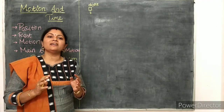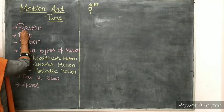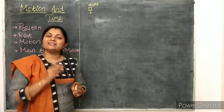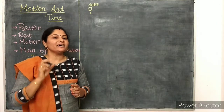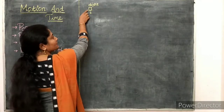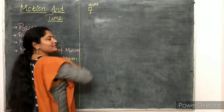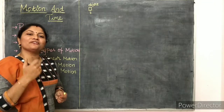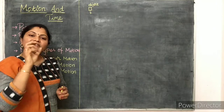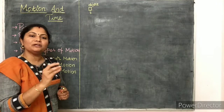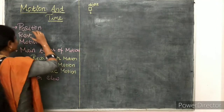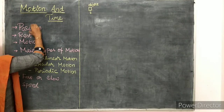In this class we will discuss completely about motion. Before that, we should know what is meant by position, rest, and motion. Position means it is nothing but the place where an object is placed. If we consider an object placed at a point X, that X is the position of the object.